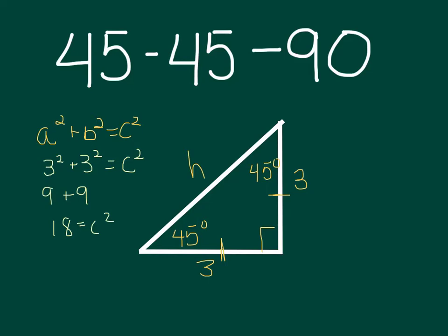So now c equals the square root of 18, and I know none of you will stop there because we just learned how to simplify radicals. So c in fact is going to equal 3√2. So my hypotenuse was 3√2.